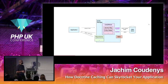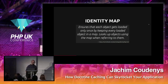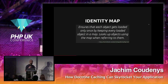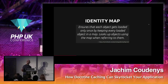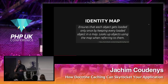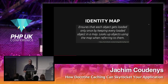Inside the Unit of Work we have an identity map, which ensures each object is loaded only once by keeping every loaded object in a map. Instead of always going to the database, Doctrine first checks if the entity is available in the identity map — to avoid having multiple instances of the same object. If you fetch user ID 1 and then query all users named Jakim, it will see it already has that entity and return the same one.